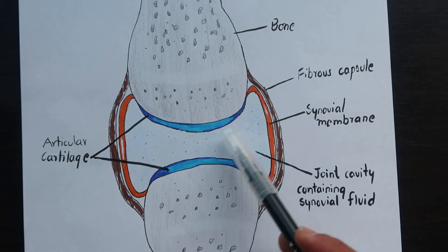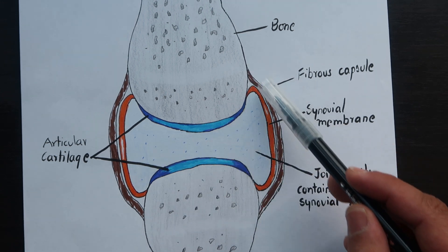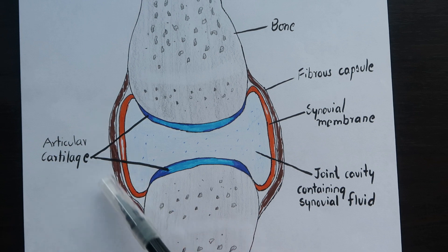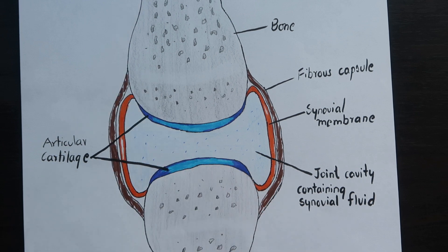We have synovial fluid in the joint cavity produced by the synovial membrane, and at last, the fibrous capsule covering the entire joint.